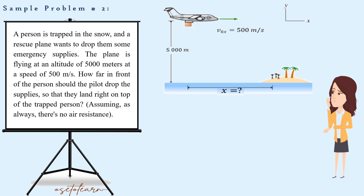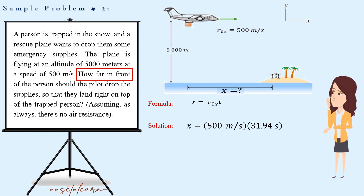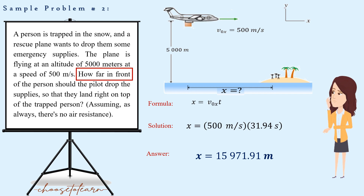Now calculate how far the supplies travel in 31.94 seconds using: x equals initial horizontal velocity times time. Substituting: x equals 500 meters per second times 31.94 seconds, giving x equals 15,971.91 meters. Therefore, the pilot should release the supplies 15,971.91 meters in front of the trapped person.